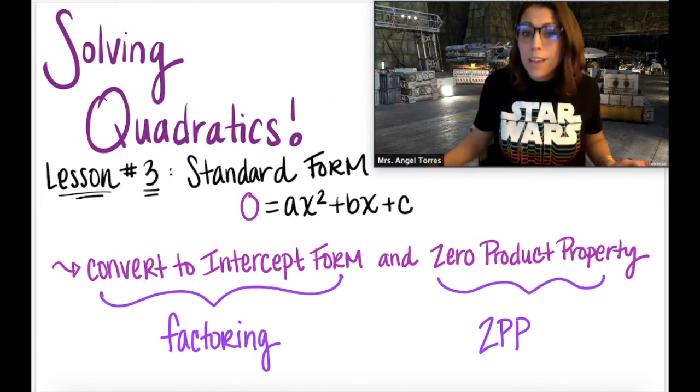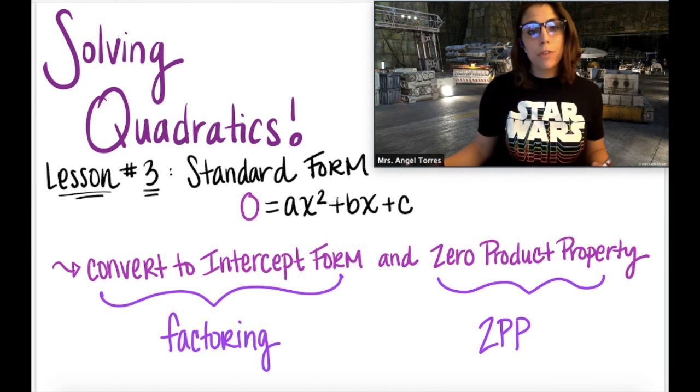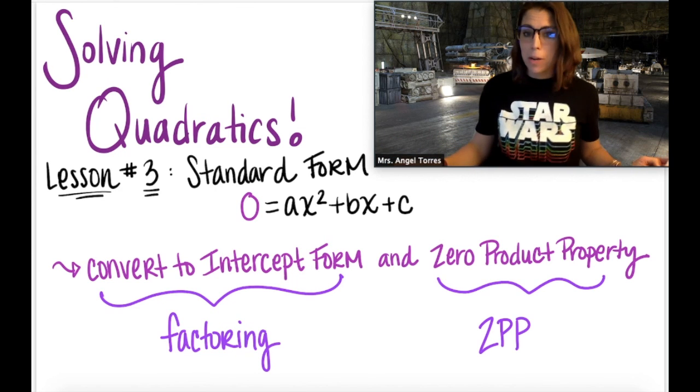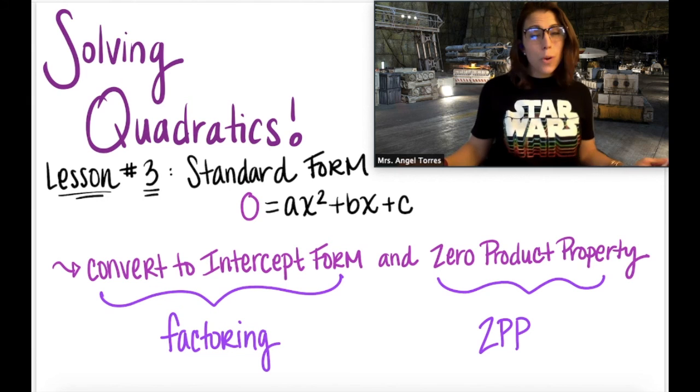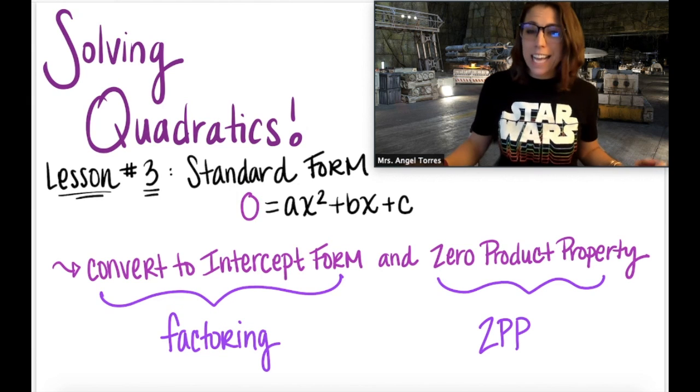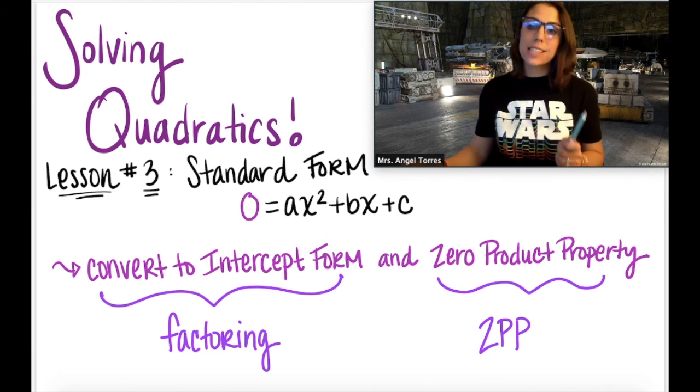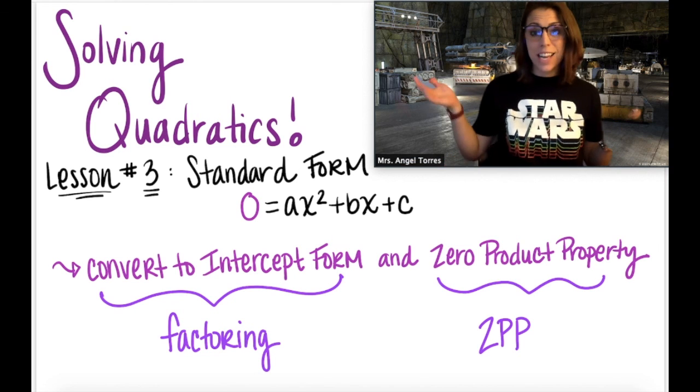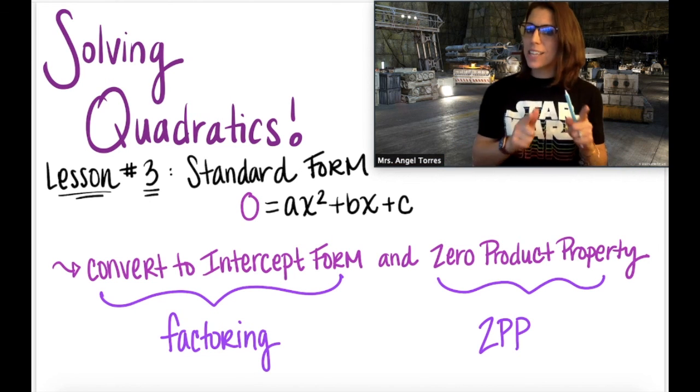So again, one of the many methods that we can use with standard form is to convert it into intercept form and then use the zero product property to solve. This only works if the quadratic can be factored. So in next lesson, we're going to learn about the other methods for standard form. For now, that's the end of our lesson, and I will see you next time.